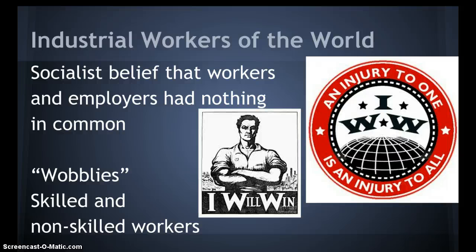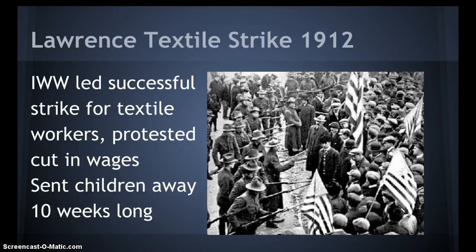Check out the different logos here — these guys are more radical. Even the use of the color red and the guy's muscles. The Industrial Workers of the World is the IWW, and they wanted to include both skilled and unskilled workers. They were based on a socialist belief that workers and employers had nothing in common. Their nickname was the Wobblies, and they had really just one successful strike. This is in our state — Lawrence, Massachusetts, 1912. They organized textile workers to protest a cut in wages. It lasted ten weeks and turned violent — they even sent their own children away — but they were able to get an increase in wages.